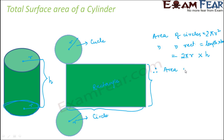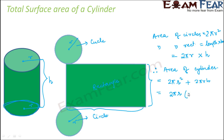Therefore, what would be the total surface area of the cylinder? When we talk about the total surface area, we mean top, bottom, and body — all areas are considered. So the total surface area of the cylinder will be equal to the area of the circles, which is 2πr², plus the area of the rectangular part, which is 2πrh. If you compare these two terms, 2πr is common. So this becomes 2πr(r + h). This is the total surface area of a cylinder.